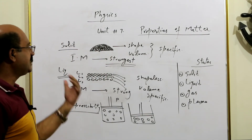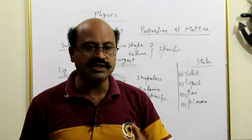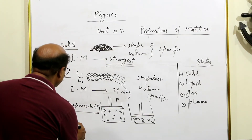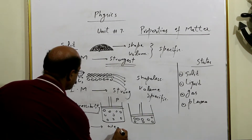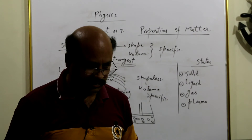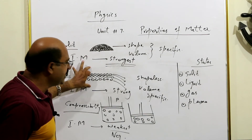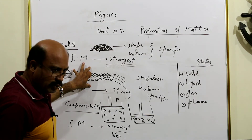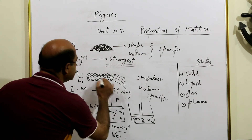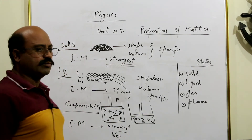Acha, maine aap ek word use kiya — temperature. Jo kinetic molecular model hai, is ka talluq temperature se hai, kinetic energy se hai. Gas ki kinetic energy sabse zyada hogi, jis ki wajah se intermolecular forces weakest hongi — ya negligible kehna zyada better hai. Solid ki kinetic energy is lowest. Liquid ki kinetic energy low. Gas ki kinetic energy free — they can move randomly. Liquid mein bhi random motion hai lekin slip, yani layers ki shakl mein. Gas molecules jahan marzi takaraate rehte hain — un ki motion bhi random motion hai.